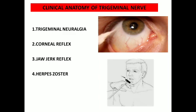Herpes zoster eruptions can occur throughout the distribution of the trigeminal nerve. Sometimes only one territory is affected, with eruptions seen in the distribution of the ophthalmic, maxillary, or mandibular nerve respectively.